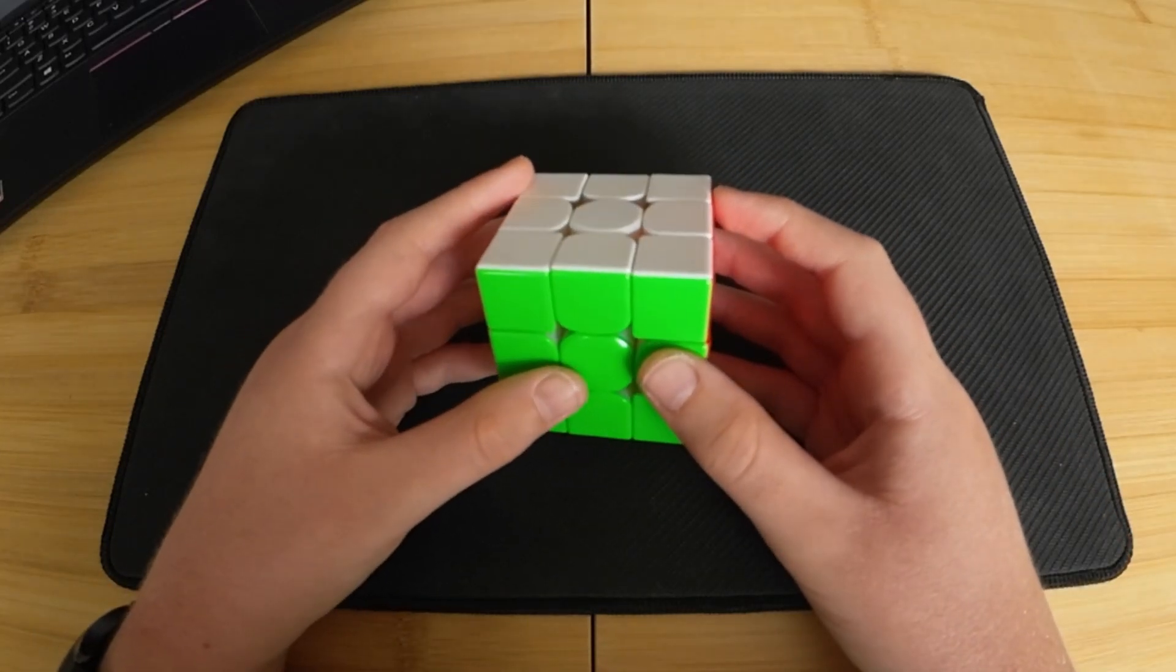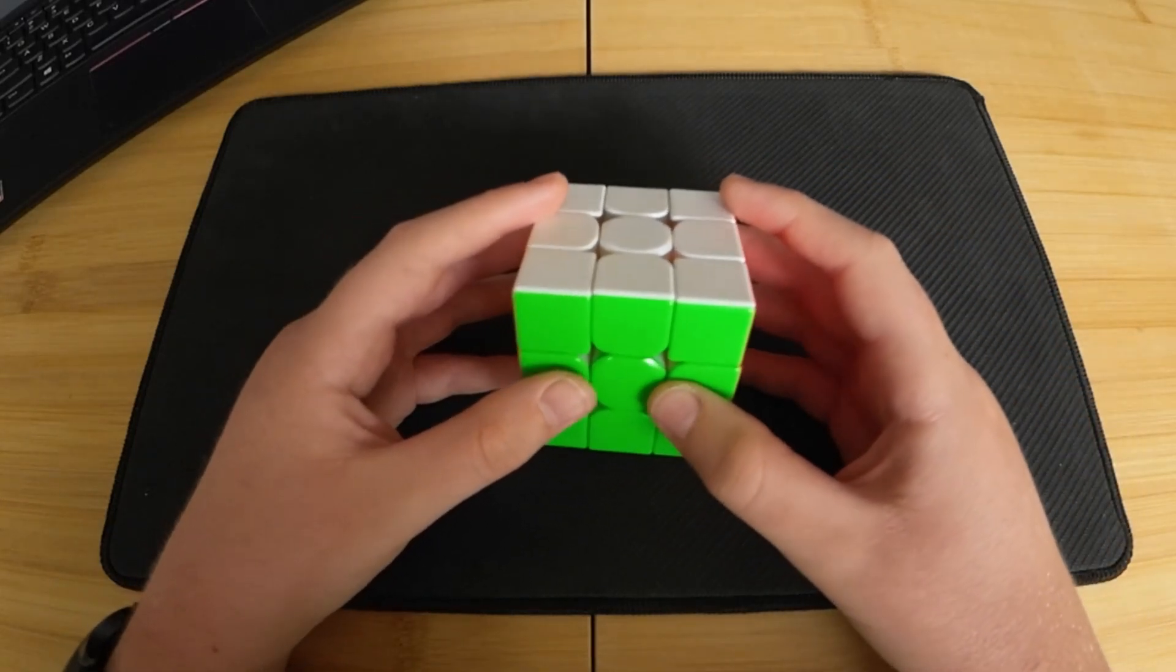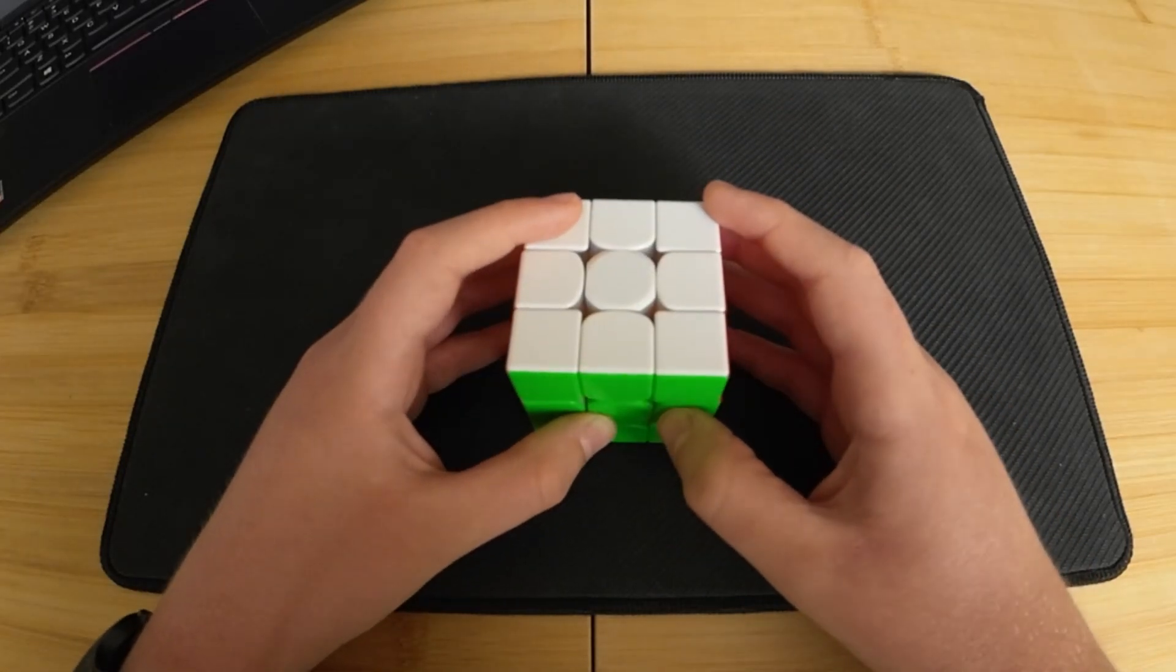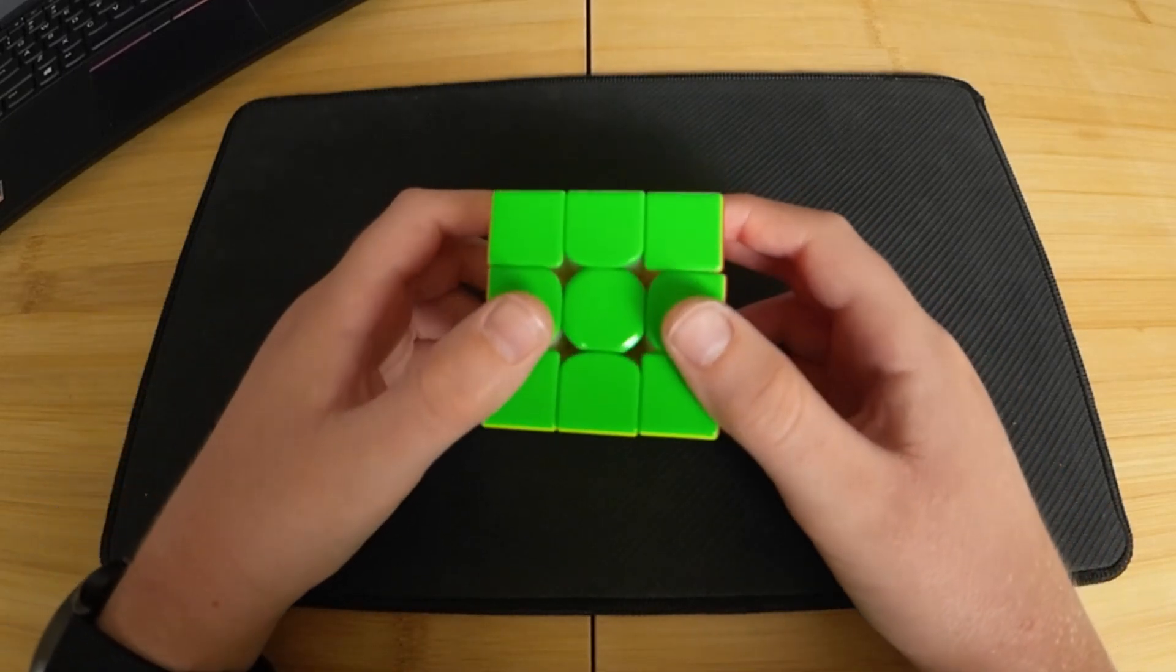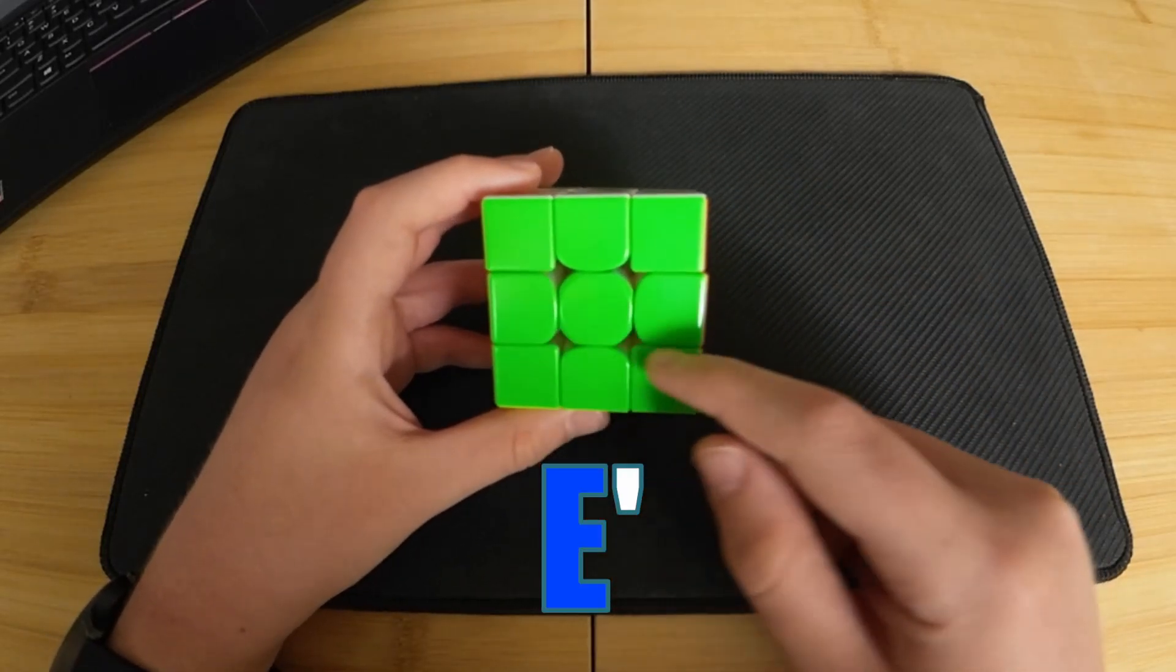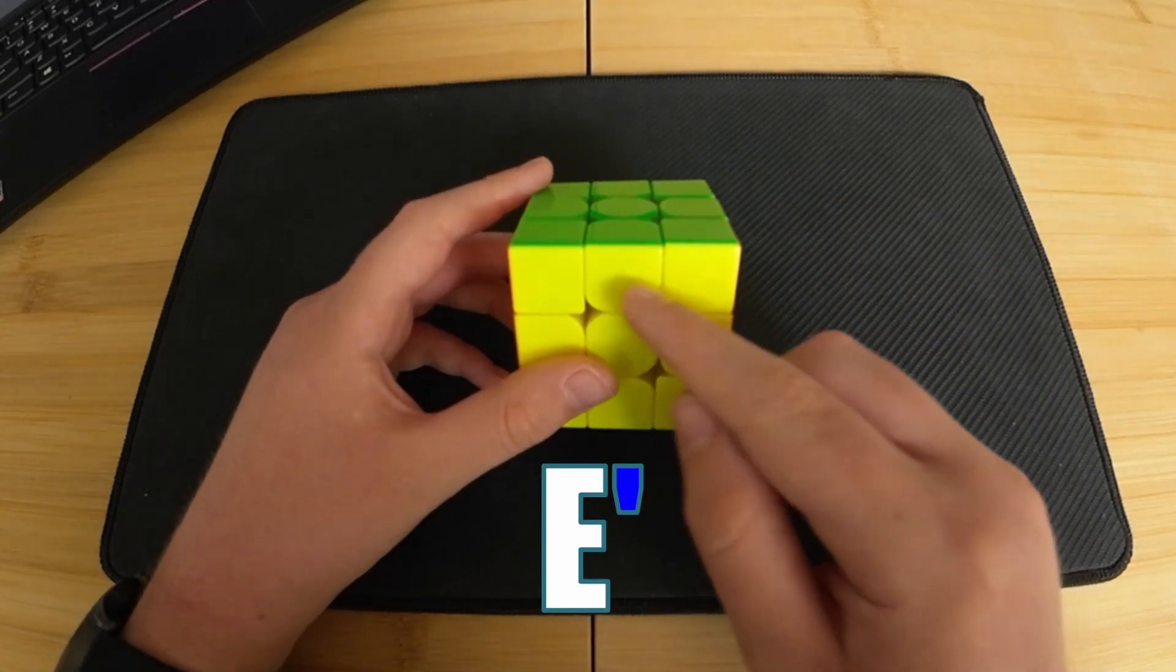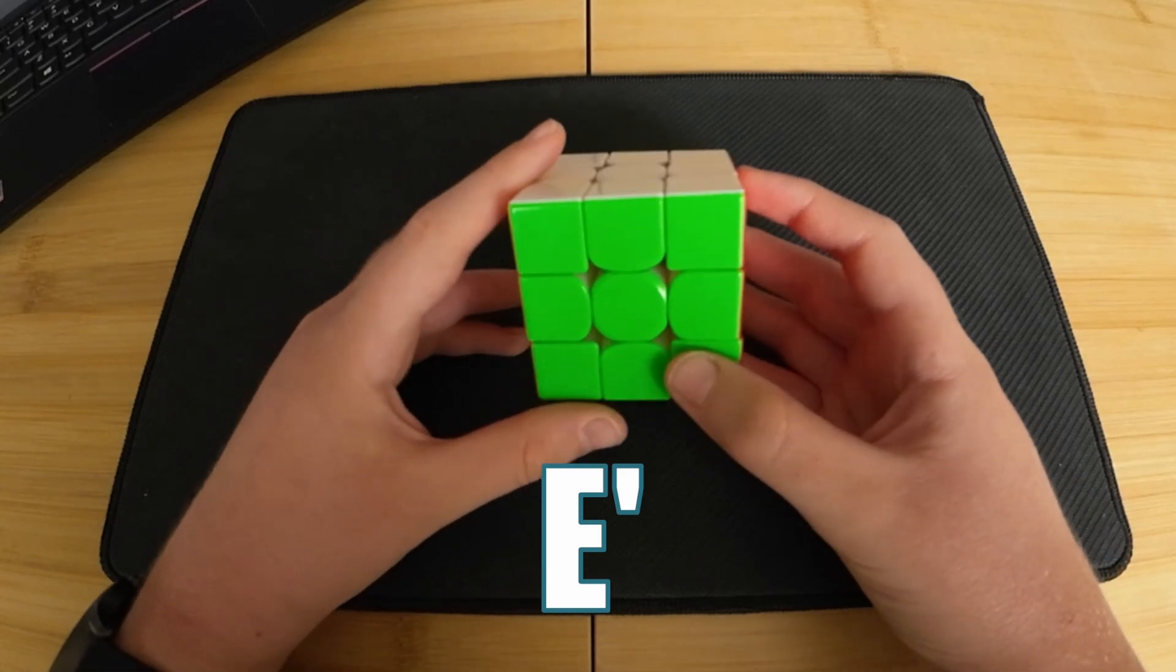For the S slice, we're already looking at it the right way. So if it's clockwise, then you can move it clockwise, or if it's S', which is counterclockwise, then you can just move it counterclockwise like that. For the E slice, imagine rotating the cube sort of down like this. So if we had E', which is E counterclockwise, then remember E is for equatorial, so it's along the middle down like this. Then counterclockwise goes this way, and that's how our E would go. And so doing it from here, E' would be like this.